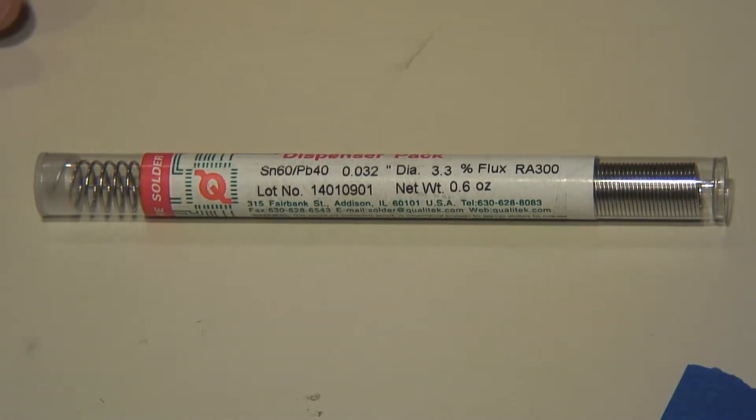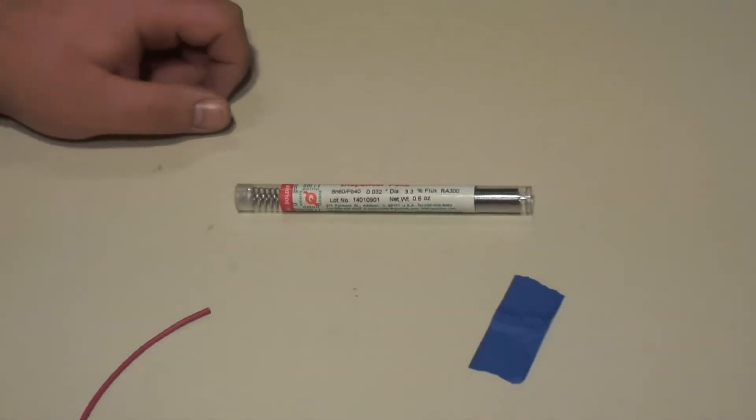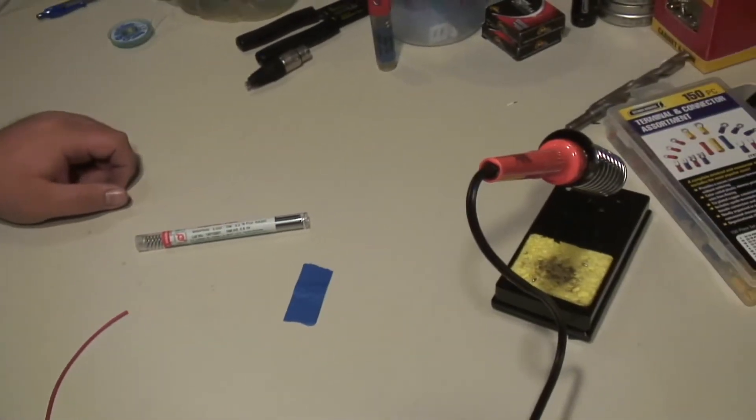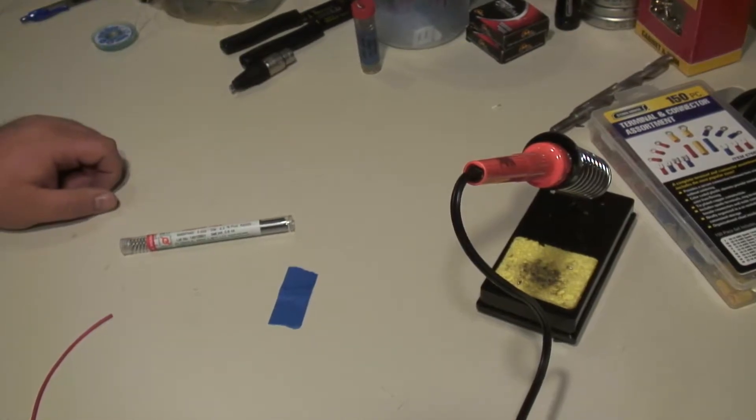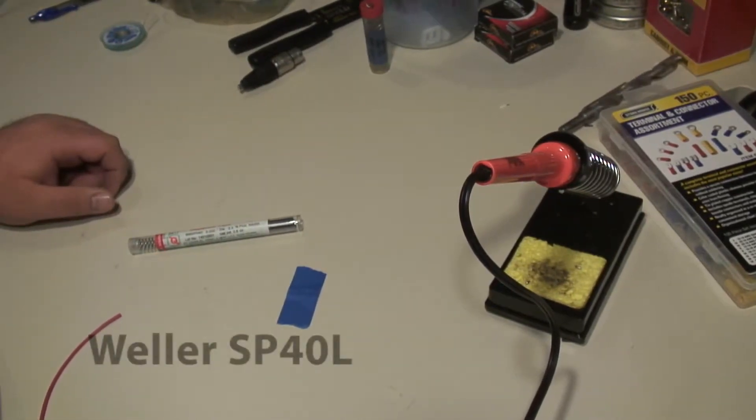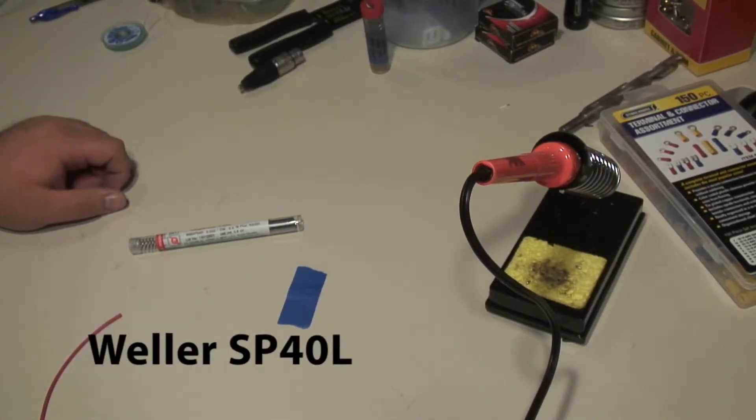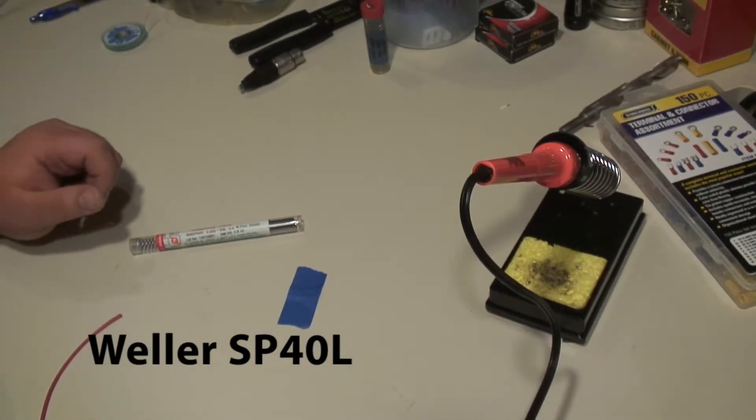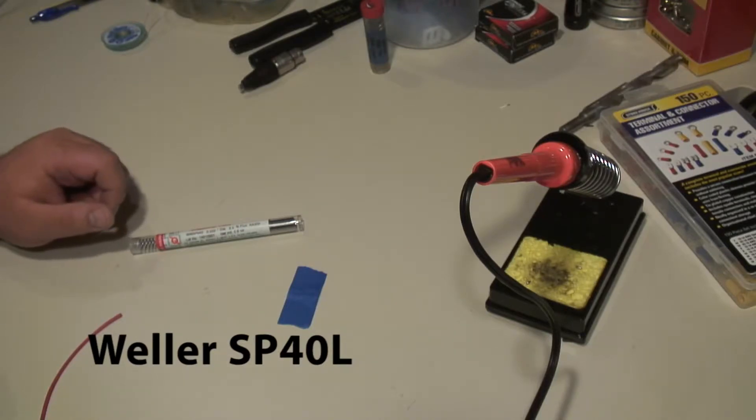So what we're going to do here, let me zoom out and I'll talk briefly about my soldering iron, which is a Weller SPL 40 L. I'll put a little title down there in case you want to buy that one. I don't know if they still make it, but it's a good little iron, but it's not temperature controlled or fancy.